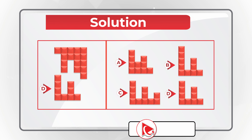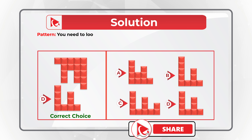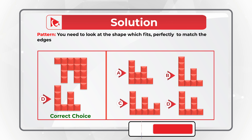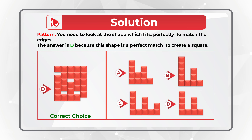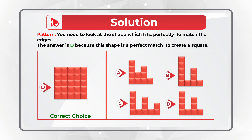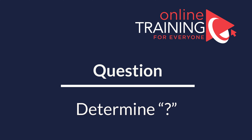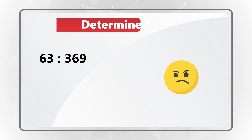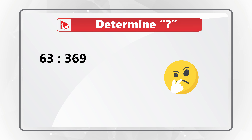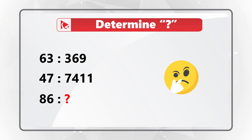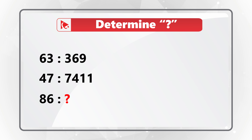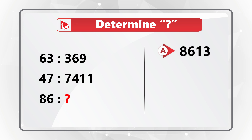Here's a very interesting question testing your spatial reasoning. You're presented with a partial square and need to find the missing shape to build the full square. Choose from options A, B, C, or D. The correct answer is choice D — it fits perfectly to match the edges of this 5×5 square, creating the full square.